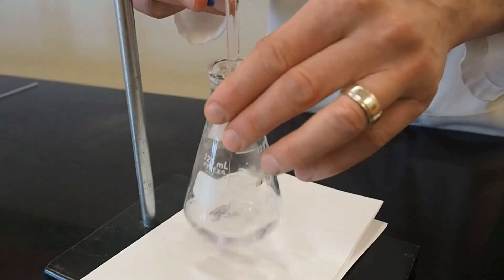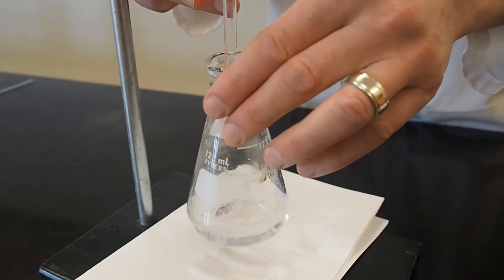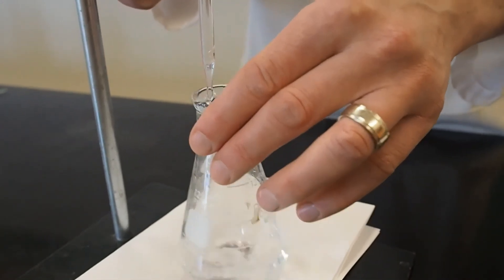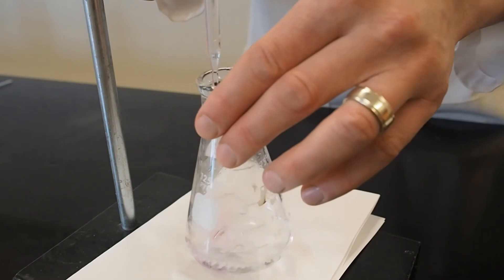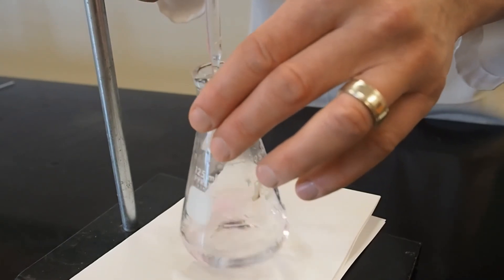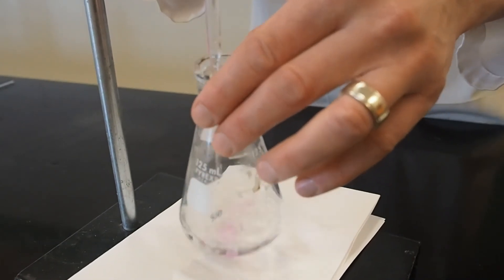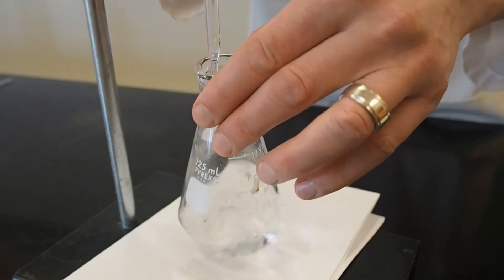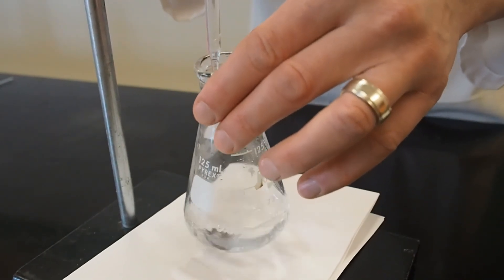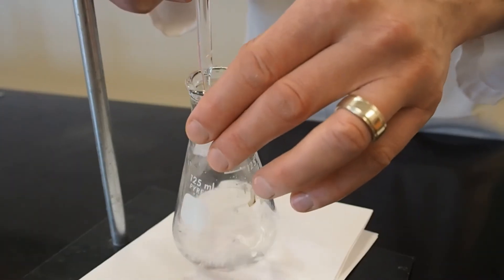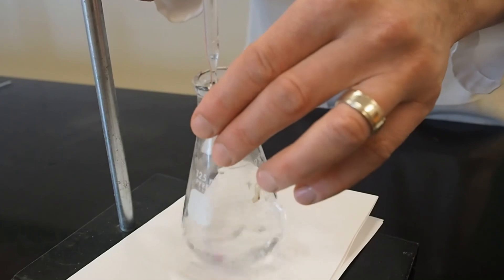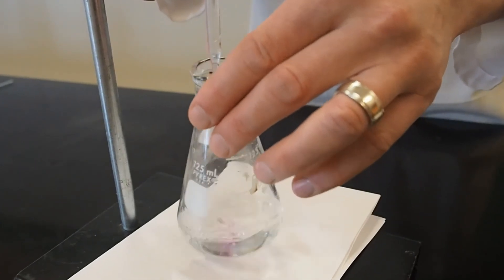Titrate until you notice the first sign of permanent color change. This is the end point and should be an intermediate color between the two colors of the indicator. If one of those colors is colorless, then the end point color will be a very pale version of the other color. As you titrate, you will notice the titrant changing colors. Swirl continuously to allow the solutions to mix.